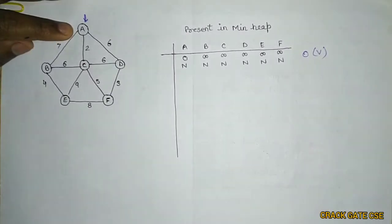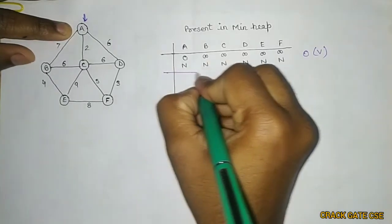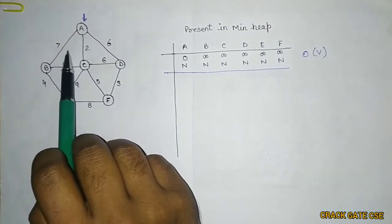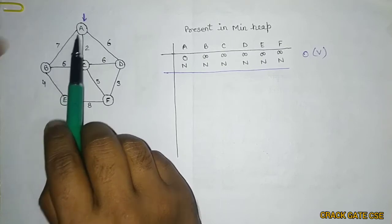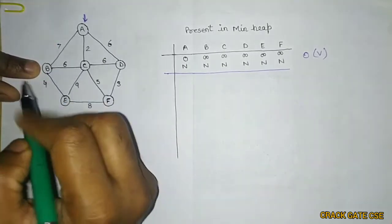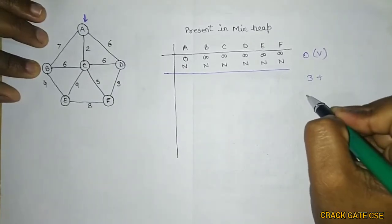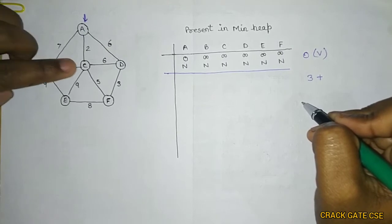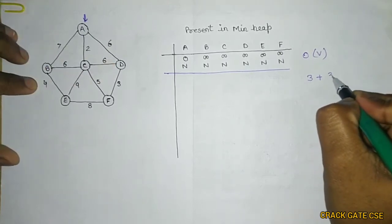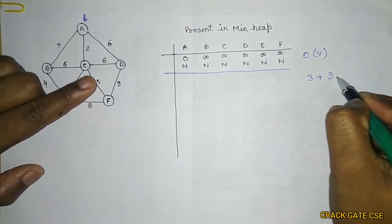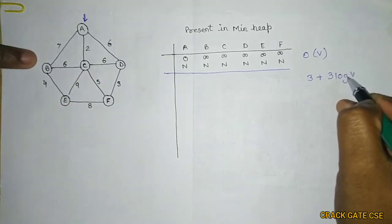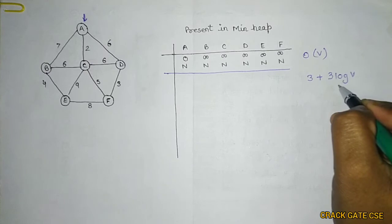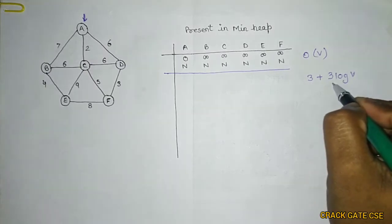We selected A. Now we perform the decrease key operation on its adjacent vertices. Using the adjacency list, how many adjacent vertices does A have? Three: B, C, D. So we perform the decrease key operation at three places, and each decrease key operation takes O(log V). Therefore, performing it on all three takes 3 log V.